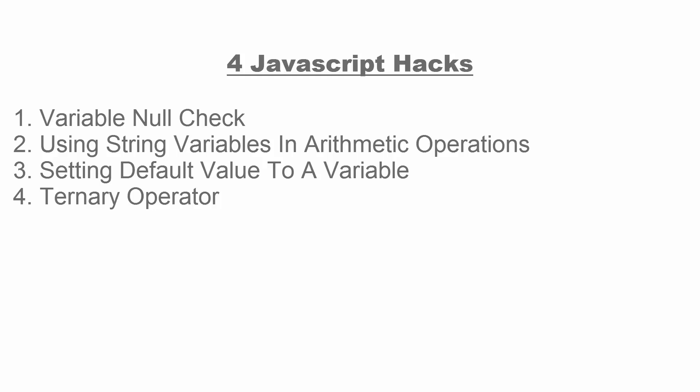I will be explaining four different JavaScript hacks: variable null check, using string variables in arithmetic operations, setting default value to a variable, and ternary operator.